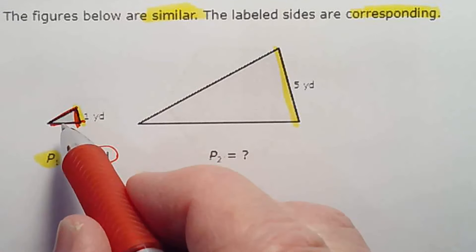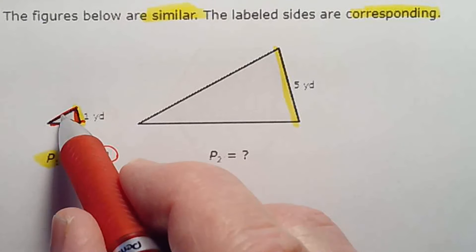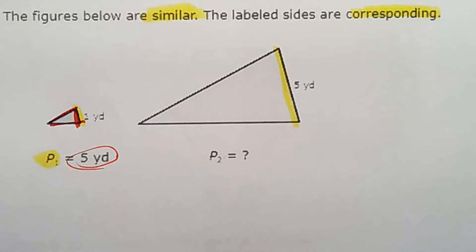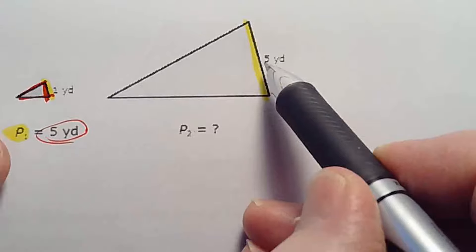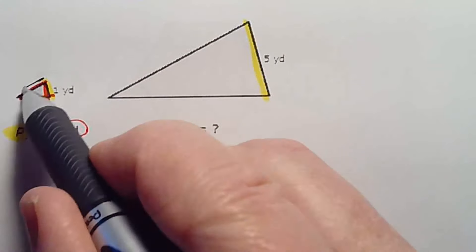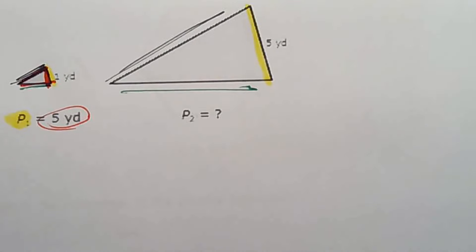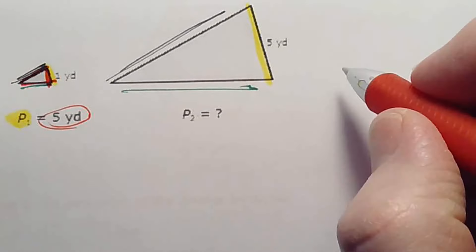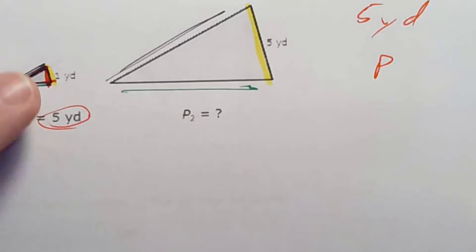Now it might be an isosceles triangle. We don't know and it turns out we don't have to know — maybe the sides are two and two, maybe 2.1 and 1.9 — but this works anyway. When comparing perimeters, the calculation is pretty straightforward: you just multiply by the ratio. If this side is five times bigger, then every side is five times bigger, so once around is also five times bigger. So we start with the five yards perimeter.